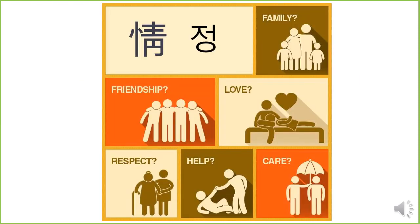So, what is 정? Originally, 정 simply means a lot of different shades and kinds of feeling. You can feel 정 among family members, when you are with your friends, and when men and women are in love. When you respect somebody or are respected, when you help somebody or are helped, when you care for someone or are cared by others — that's when you feel this feeling, emotion, 정.